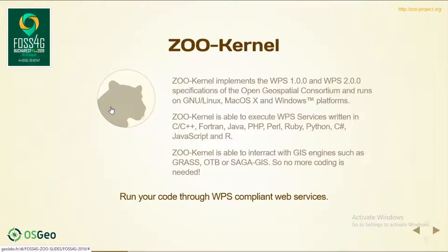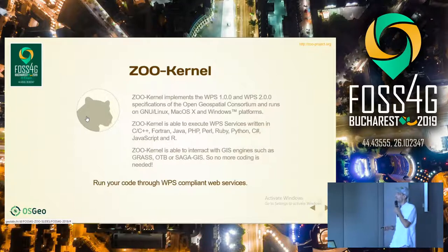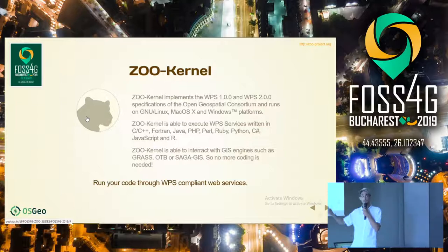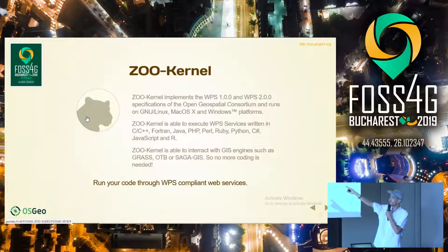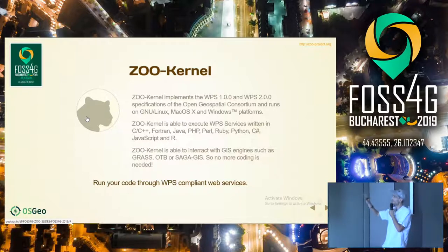The ZOO kernel is a C application running as a CGI. It supports WPS 1.0 and WPS 2.0 100%. It runs on every operating system since it is written in C, making it easy to port. It supports executing services implemented in C, C++, Fortran, Java, PHP, Perl, Ruby, Python, C#, JavaScript, and R.